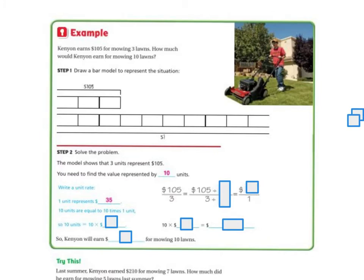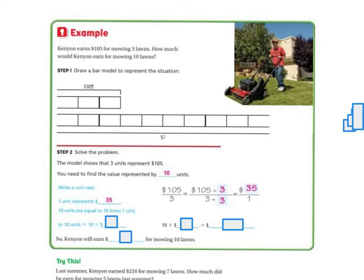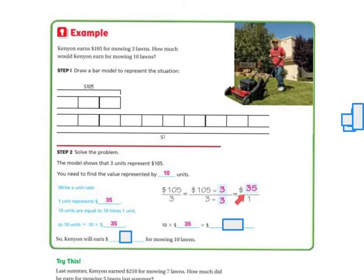I know that because I have three lawns, so to find out how much each one is, I divide 105 by 3 and get 35. So I divide both sides by 3, top and bottom, and my unit rate is: for every one lawn, we're making $35. So for 10 lawns, that's 10 times $35. If I know that for every three lawns it's $105, and for every one lawn it's $35, then 10 times 35 gives me $350. So Kenyon will earn $350 for mowing 10 lawns.